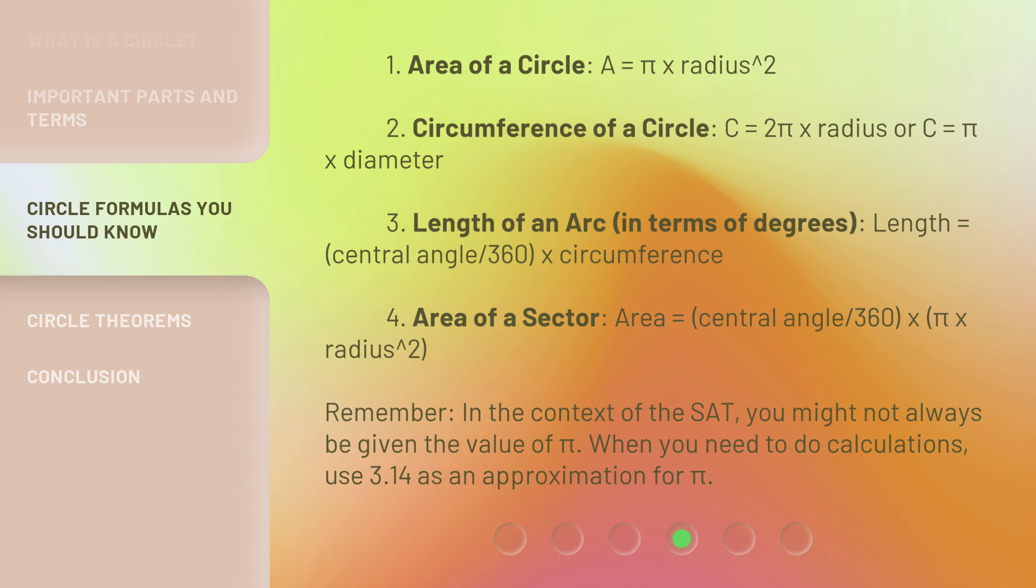4. Area of a sector: area = (central angle / 360) × (π × radius²).